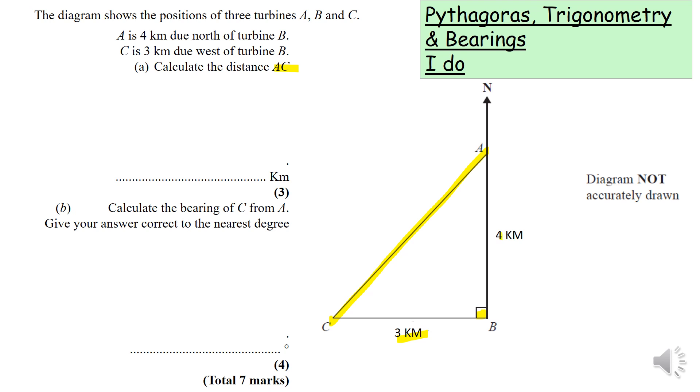Straight away to me, two lengths given, working out the third missing length - it's Pythagoras. We need to label up our sides: the longest side we always label as C, and the other two sides as A and B.